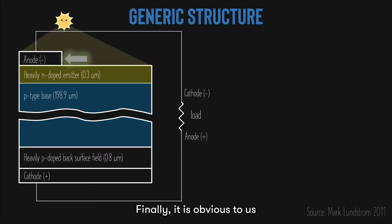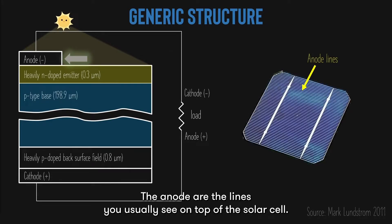Finally, it is obvious to us that the anode has to be perforated, usually only covering 10% of the top surface, as to allow as much light as possible to come in. The anode are the lines you usually see on top of the solar cell.